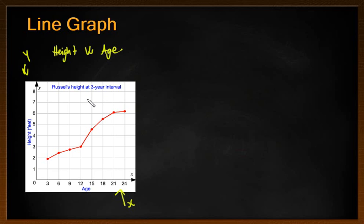Okay, so information that we can be asked are things such as what was his height when he was six years of age. We can see here that's our six years of age. We go up to our little dot, go across to the y-axis there and he was 2.5 feet. So at six years old, he was two and a half feet.